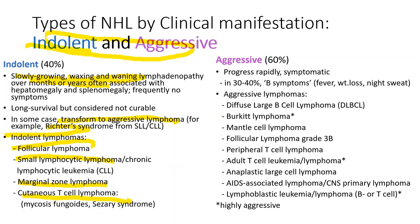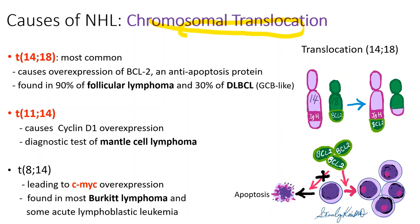Aggressive lymphoma progresses rapidly and is symptomatic. These include diffuse large B cell lymphoma, Burkitt lymphoma, mantle cell lymphoma, follicular lymphoma grade 3B (which I will mention later), peripheral T cell lymphoma, and others.